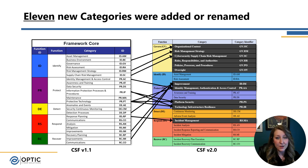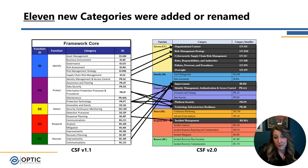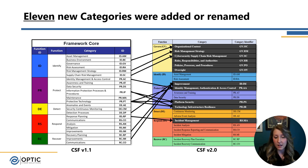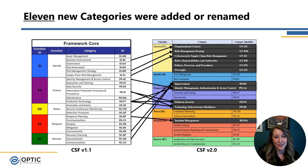We can see where much of those categories are coming from — Identify moving up to Govern. The Improvements category is actually coming a lot from Respond and Recover, where there were some improvement activities. And it's also being broadened to cover improvement activities across your entire cybersecurity program. A couple of other call-outs in Protect: platform security and technology infrastructure resilience. 'Platform' is a term showing up more in the framework, highlighting a more generic way of talking about assets or systems for an organization. They've rolled in previous categories such as information protection processes and procedures, as well as protective technologies, into that new category.